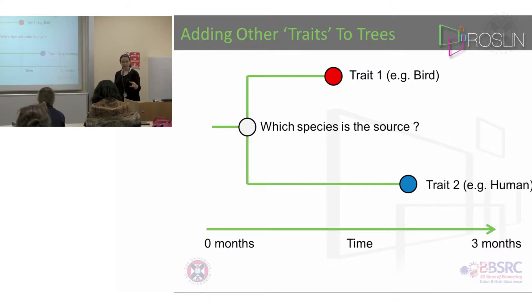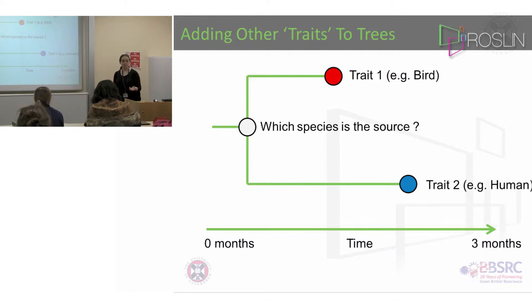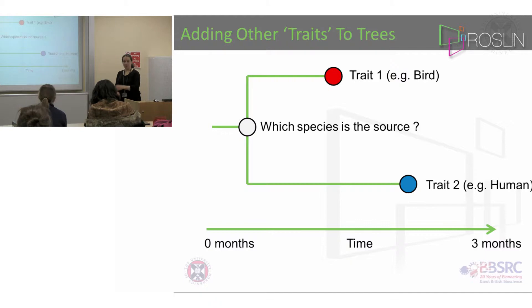Alternatively, using the exact same programme and same code, we could ask: instead of locations, these could be traits. And these traits could be species. So the first sequence could be from birds and the second from humans. And you could be asking which was the source — birds or humans?